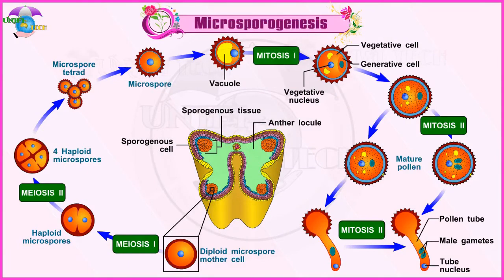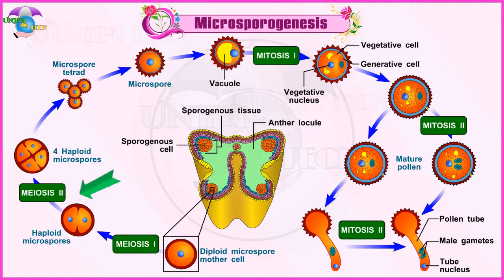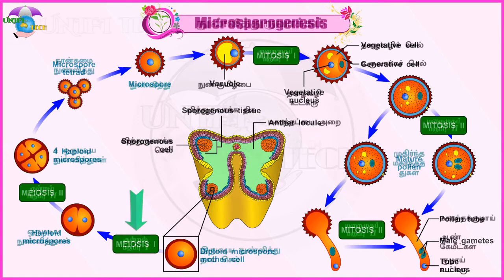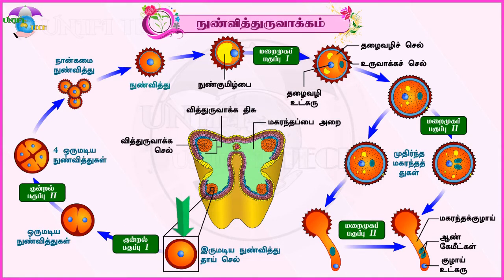Microsporogenesis: The stages involved in the formation of haploid microspores from diploid microspore mother cells through meiosis is called microsporogenesis.